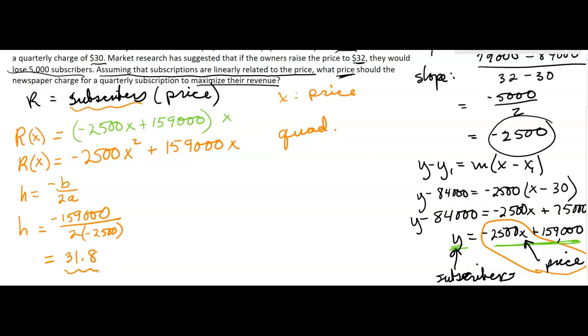So this tells us the price. Do we want to know how much money we're going to make? It says what price should the newspaper charge to maximize their revenue? They don't care how much money we're making, so the price we should charge should be $31.80.